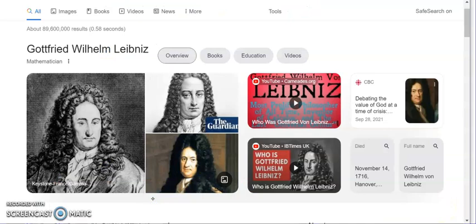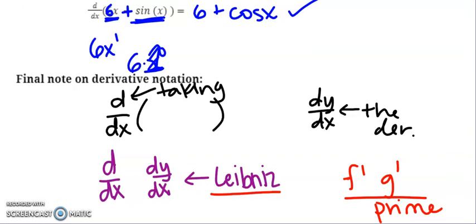Here's Leibniz in all of his glory with his wig. We'll talk about him. We'll talk about Newton as the days progress. But that's it. The derivative of sine is cosine. The derivative of cosine is the opposite of sine.